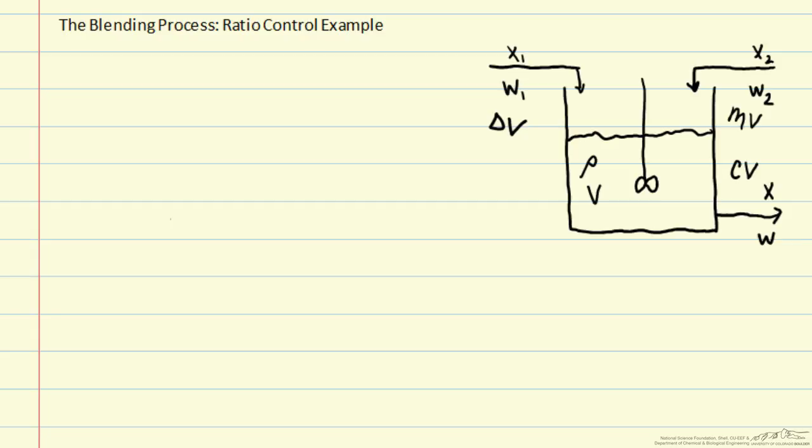In the last screencast, we went through the general concept of ratio control, which is a type of feedforward control. Specifically, we measured the disturbance variable W1 and then adjusted W2, the manipulated variable, in order to hold the two mass flow rates at a fixed ratio. And based on the steady state values we've been using in previous screencasts, we decided to keep them at a ratio of 3.